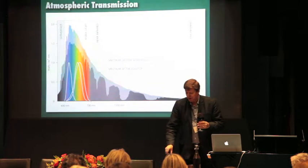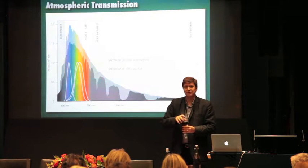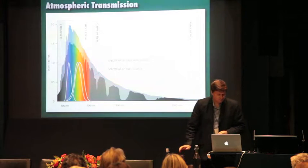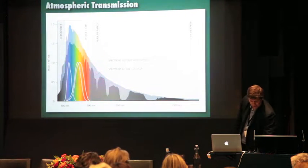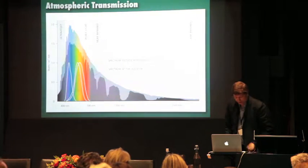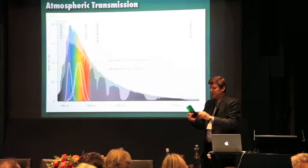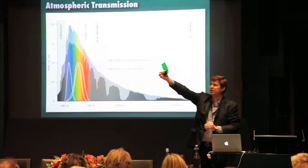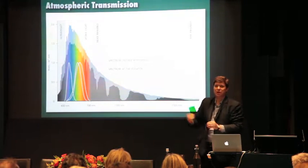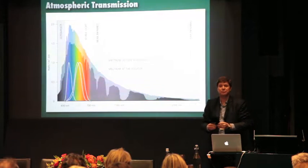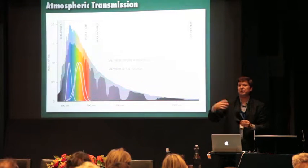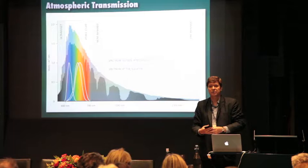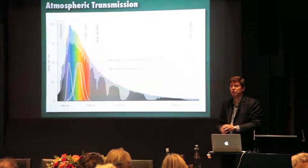Well, when I was taught about colour, we were taught that colour is basically additive. We've got three primary colours — red, blue, and green. And when you add them together, that makes white. But actually, that's not the way that colours appear or colours are formed in nature.